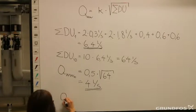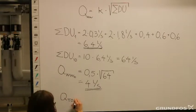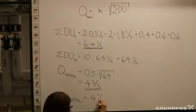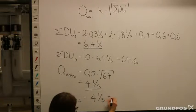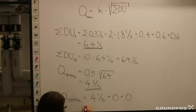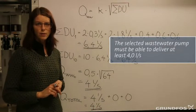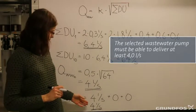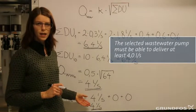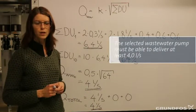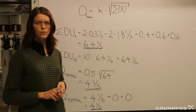Q_total will then be 4 liters per second for the wastewater, plus 0 for the continuous flow rate, plus 0 for the pumping flow rate. So we have a total flow rate of 4 liters per second. This means that we must select a pump which can move at least 4 liters per second to have an efficient wastewater system to discharge the wastewater from this building.